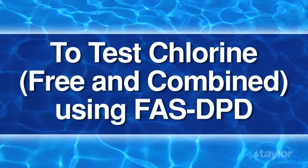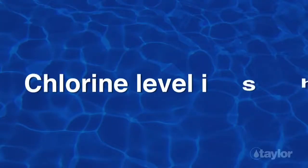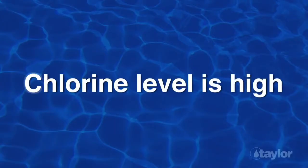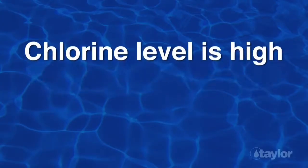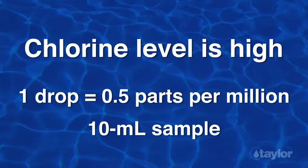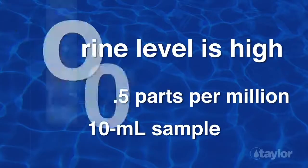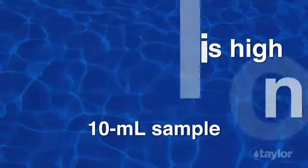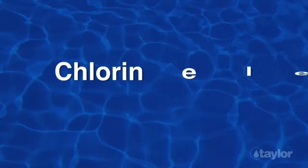To test free and combined chlorine using FAS-DPD, first decide which drop equivalents to use. If you suspect the chlorine level is high, perhaps because the water has been shocked recently, use one drop equal to 0.5 parts per million and a 10 ml sample. This will save time and titrating reagent.